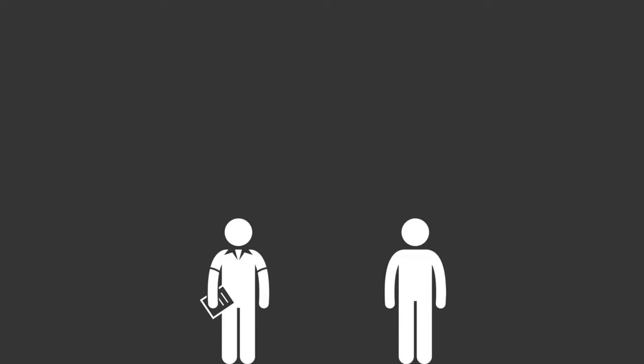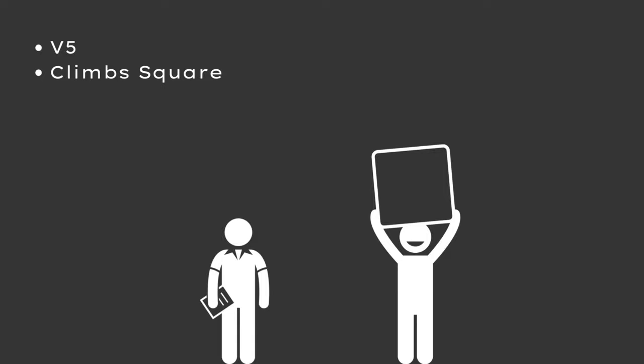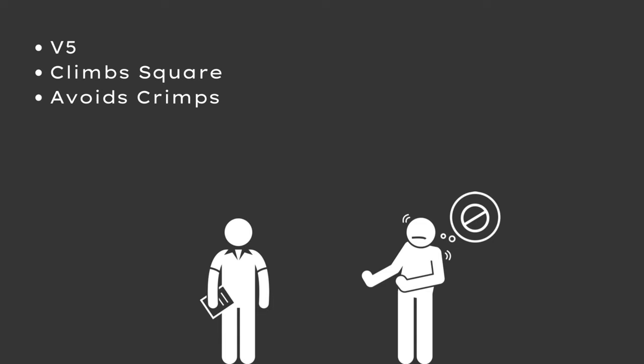Let's start with an example that maybe isn't desirable. Say you're working with a climber whose limit is around V5, and they almost always choose to remain square when a drop knee would be the better solution. You can see there are available drop knees this climber is missing, and you believe it would be more effective and efficient if they learned how to use drop knees.